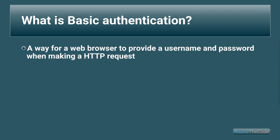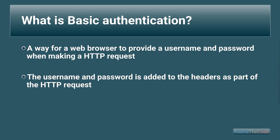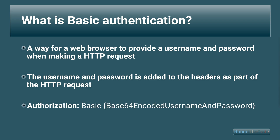Basic authentication is a way for a web browser to provide a username and password when making an HTTP request. The username and password is added to the headers as part of the HTTP request. The header is added with the authorization key and the value formatted with 'Basic', followed by a space, followed by a base64 encoded hash of the username and password.